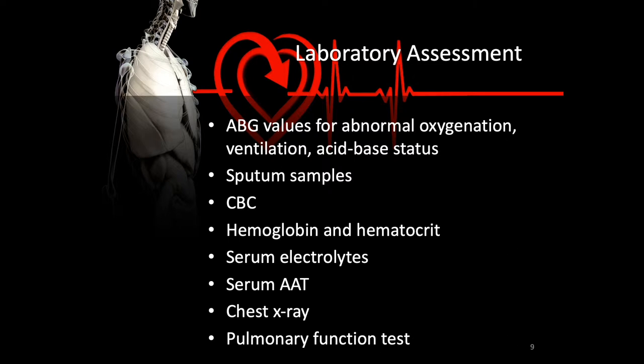Obtain and assess sputum samples for signs of infection, including CBC, hemoglobin and hematocrit, serum electrolytes, and serum AAT. Order a chest x-ray to look at the size and shape of the chest and particularly the lungs, and a pulmonary function test — because similar to asthma, the patient will not be able to move air in and out at the same speed due to narrowed airways, and volumes will be altered from normal because of changes to the lungs and cells.